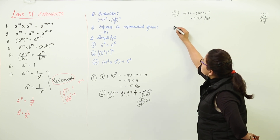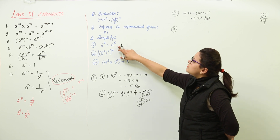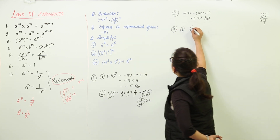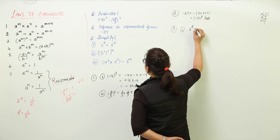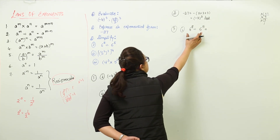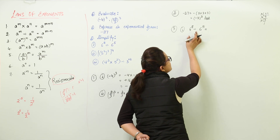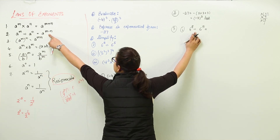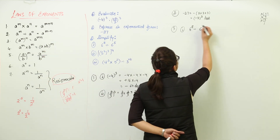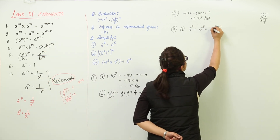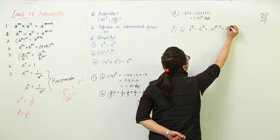Next is question number 3, in which we have to simplify these values. For simplification, we have 6 raised to power 8 divided by 6 raised to power 5. Here the bases are the same and they are getting divided, so we apply the second law: powers get subtracted. We get 6 raised to power 8 minus 5, which gives us 6 raised to power 3.